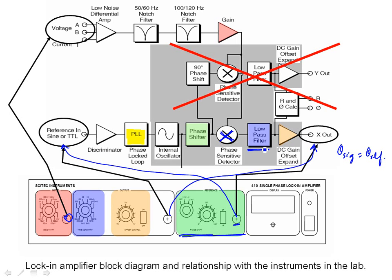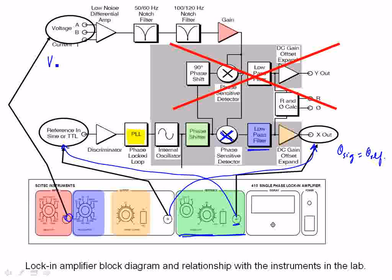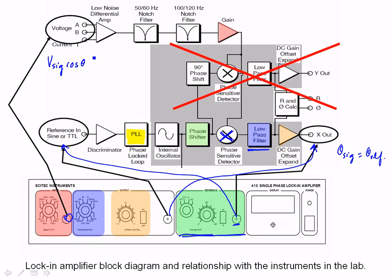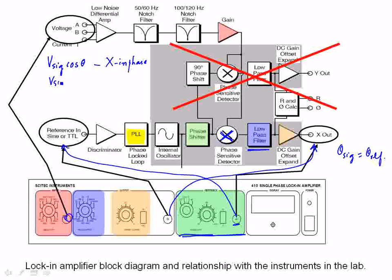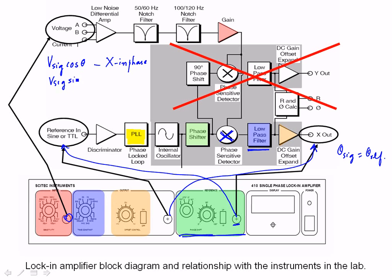and what happens in a dual-phase lock-in, the part that is crossed out is for a dual-phase lock-in. You can write the PSD output, which we derived earlier, as proportional to V-sig cosine theta, and that is the X-channel in a dual-phase lock-in. The X-channel, or the in-phase component in a dual-phase lock-in. There is also a Y-channel in a dual-phase lock-in, and you will have the output, which is proportional to V-sig sine theta, and this is quadrature, and has a 90-degree phase shift from that of the X. So, to summarize, the dual-phase lock-in gives both amplitude and phase of the signal.